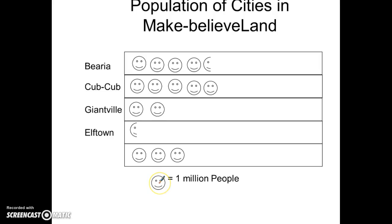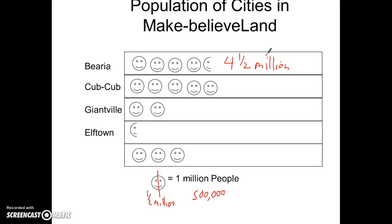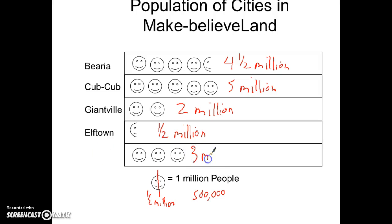Each circle is worth 1 million people. A lot of times they like to use pictographs for numbers that are really, really big — like number of cars made by Ford and Toyota, or number of people that live in a country. Looking up, I notice my only two circles that are not full look like they're right in the middle. So if I cut 1 million people in half, I could say that's half a million, or 500,000. Counting Barry: 1, 2, 3, 4 — 4 and a half million. Cub Cub: 1, 2, 3, 4, 5 — 5 million. Giantville: 2 million. Then I only have half of one — so half a million. And this one: 1, 2, 3 million people.